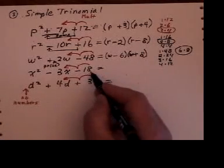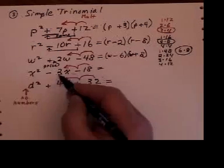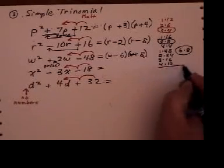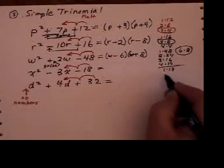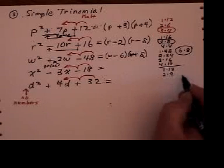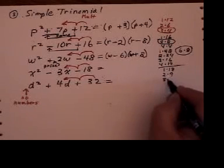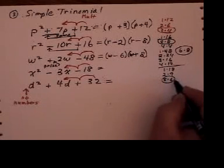This one. What multiplies to make 18 and subtracts to make 3? 1 times 18 doesn't subtract. 2 times 9 doesn't subtract. 3 times 6. Hey, they subtract to make 3. So I know 3 and 6 are going to be my answers.